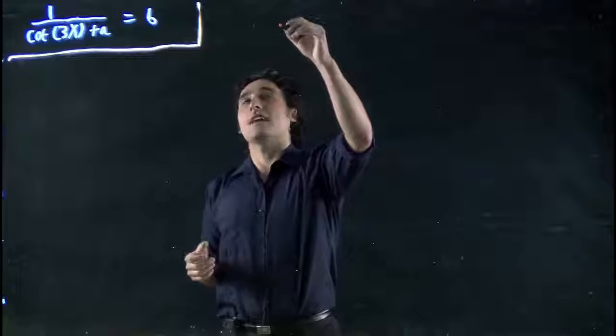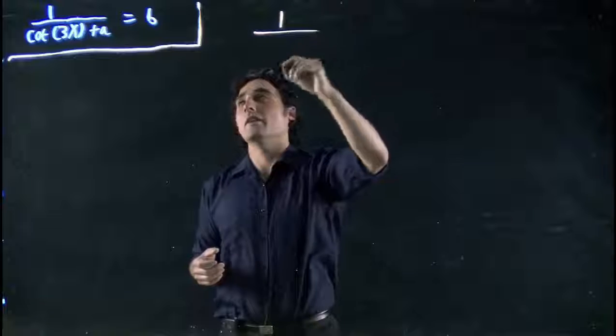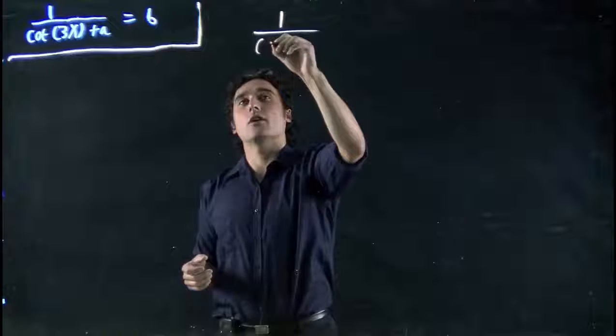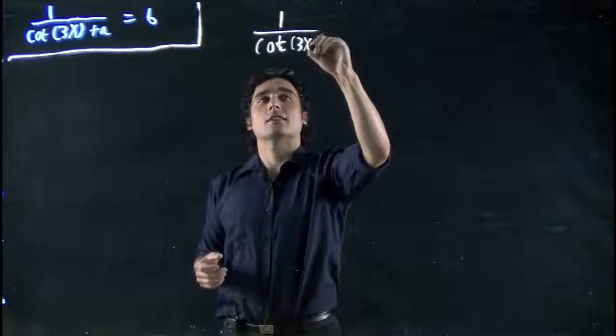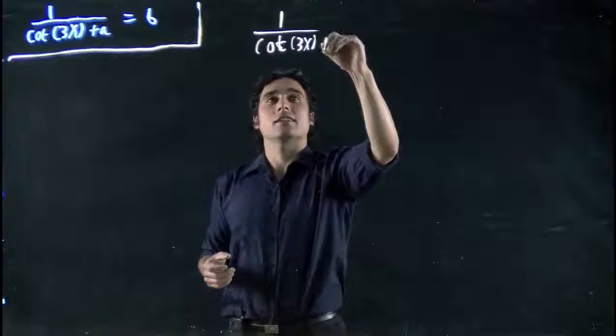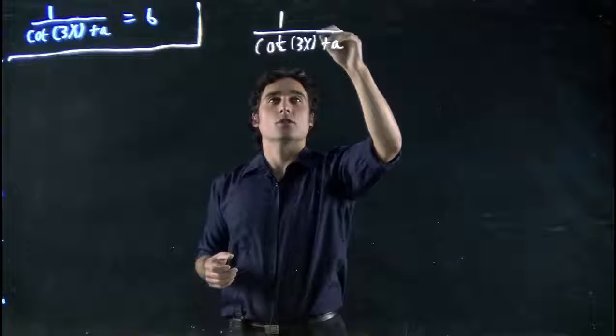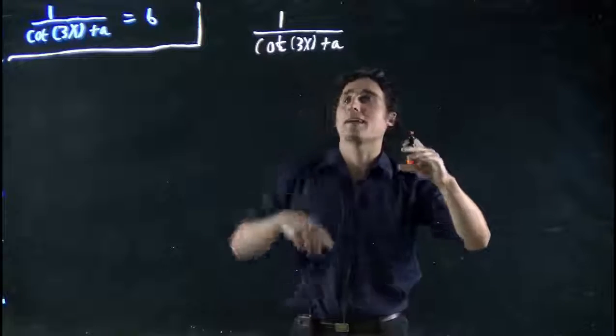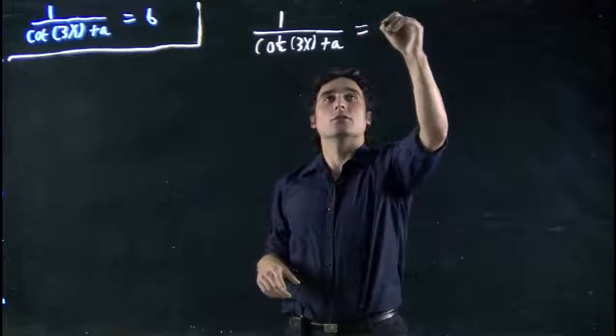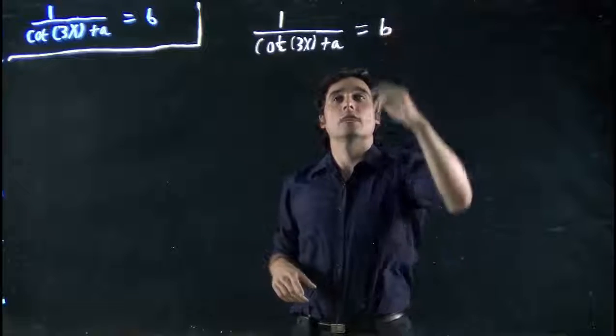So what do we got? Well, on the left hand side we have a fraction. We have 1, and that is over cotangent of 3x, and added to that is a. So one over, and everything underneath is cotangent of 3x plus a. And that's all equal to b.